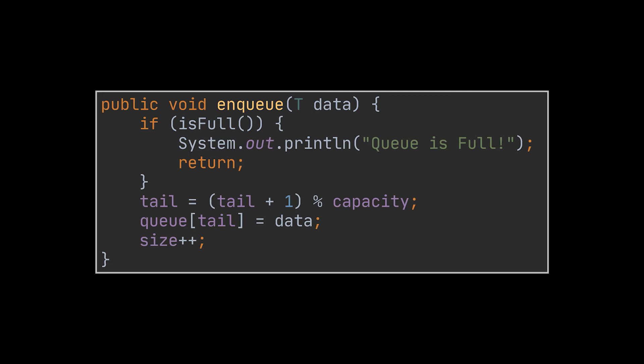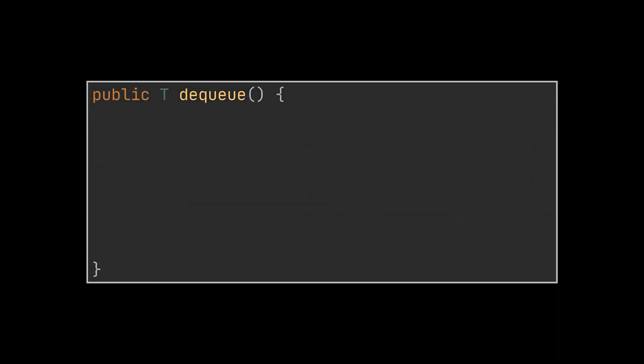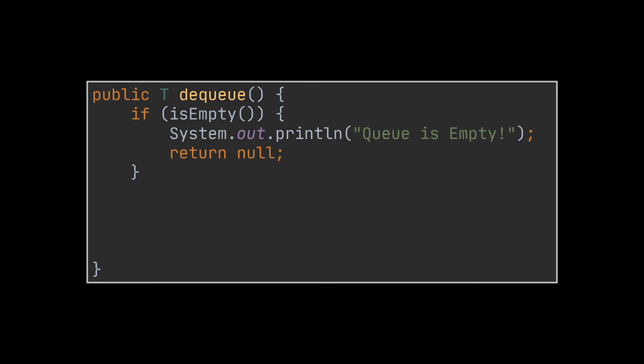This is solved using the modulo operator. In this example, five modulo five is zero, so the item is inserted at index zero, creating a circular-like queue. We are not overriding data because we only perform this operation after checking that the queue is not full. Now for the dequeue operation, instead of checking if the array is full we check if it is empty, and if so we inform the user and return.